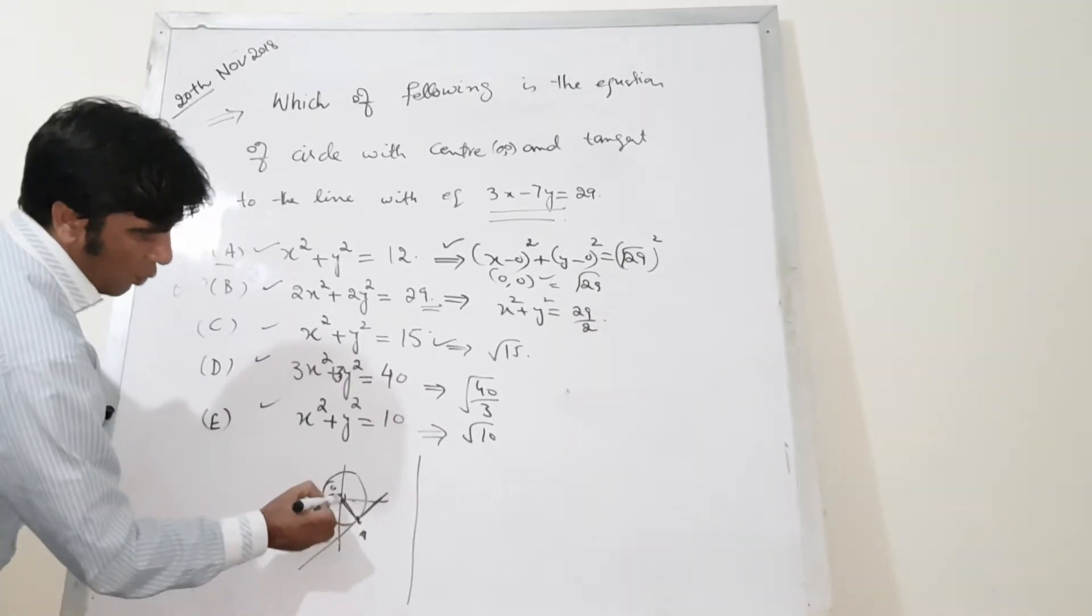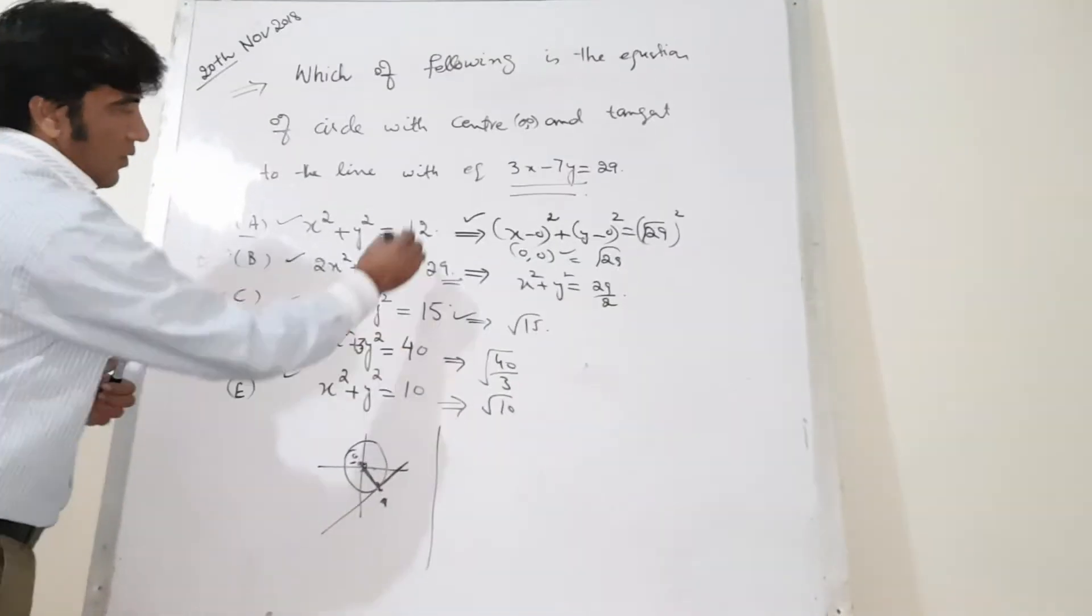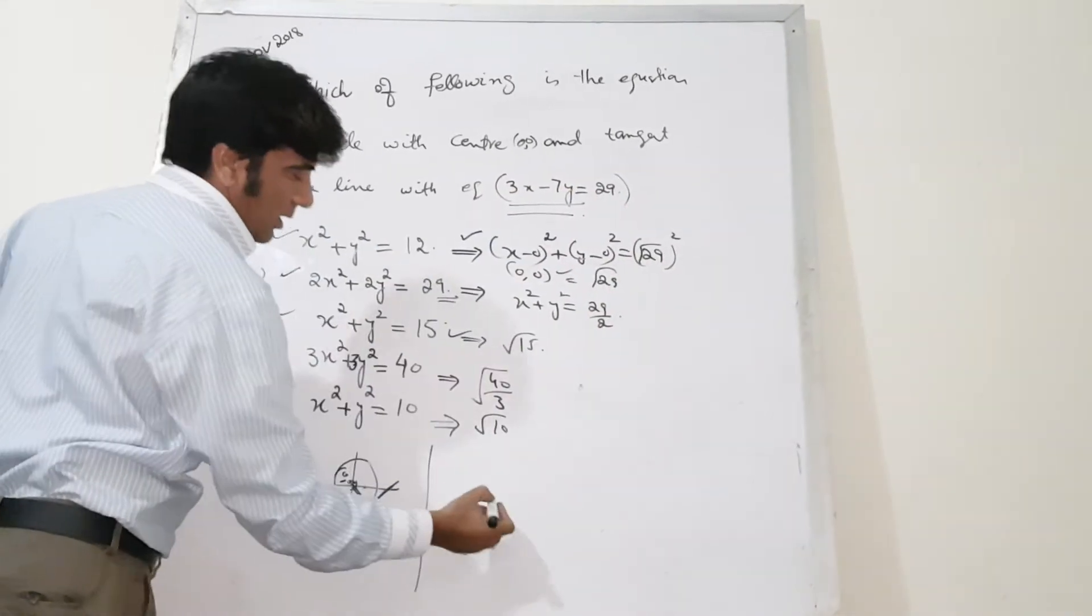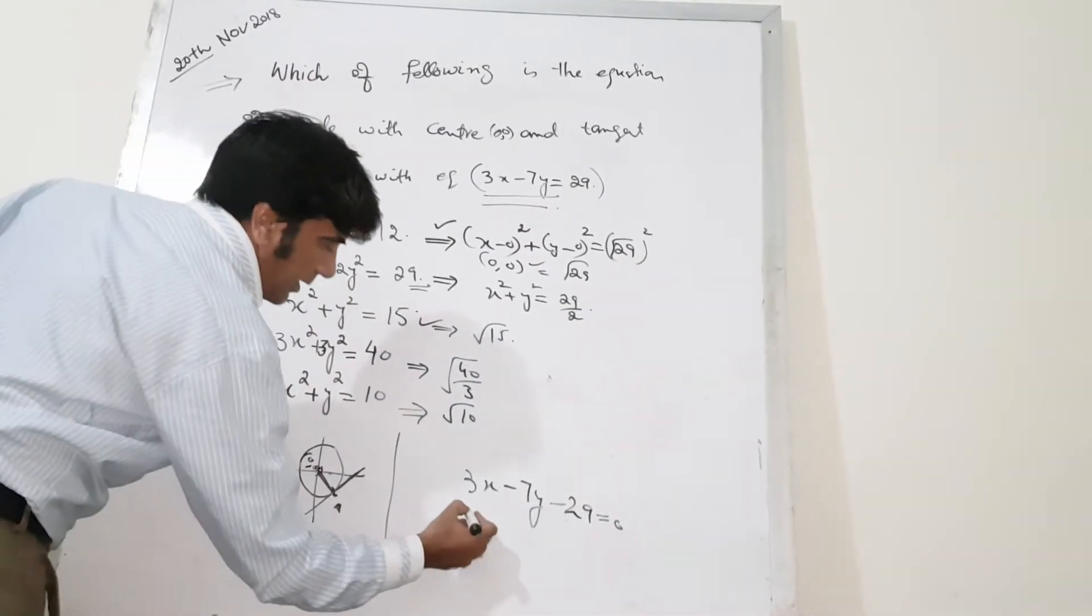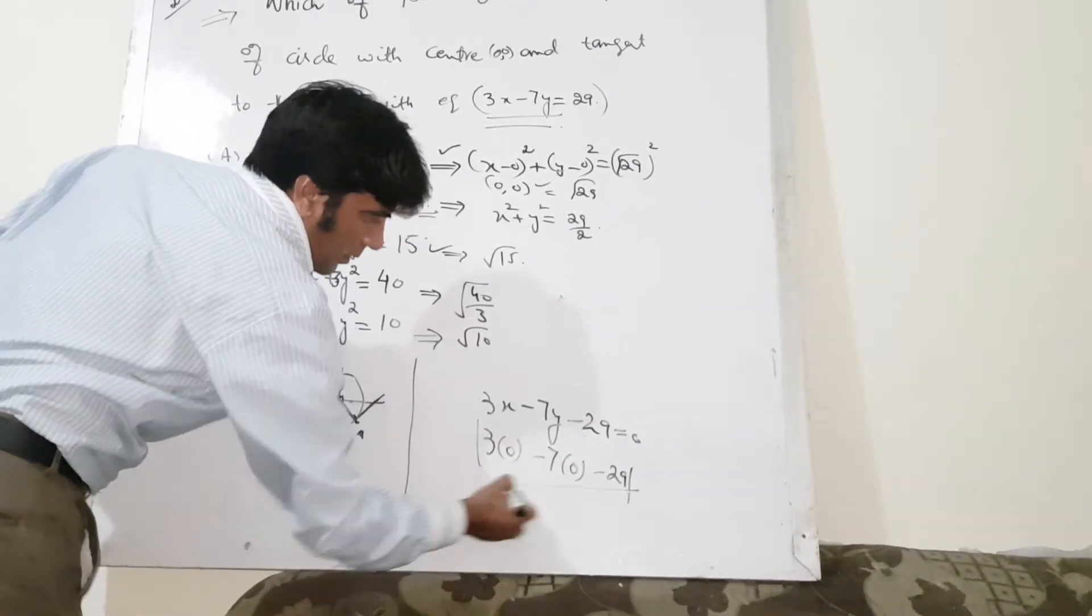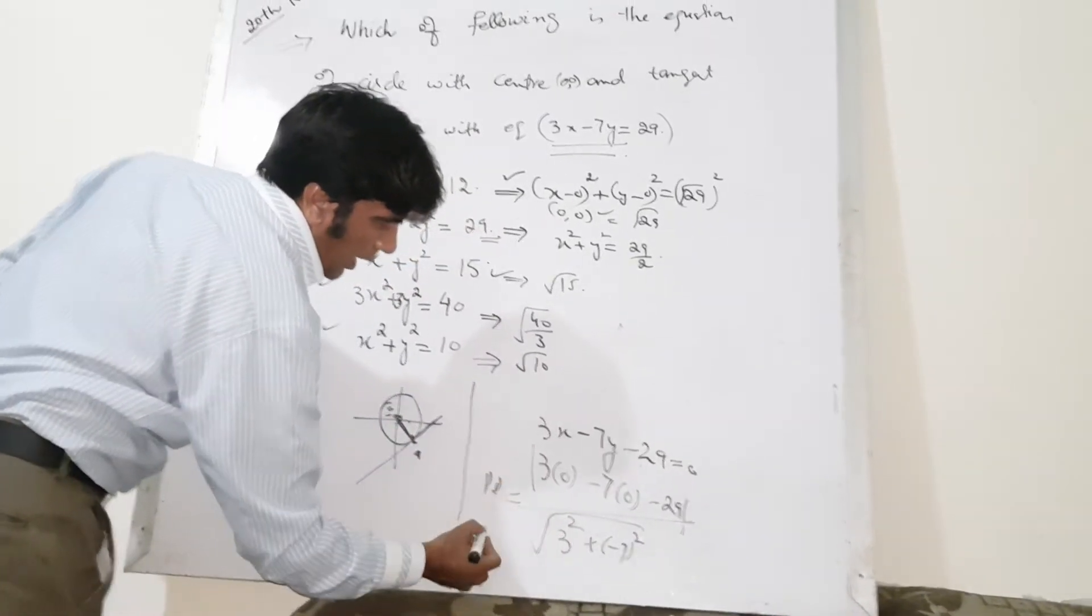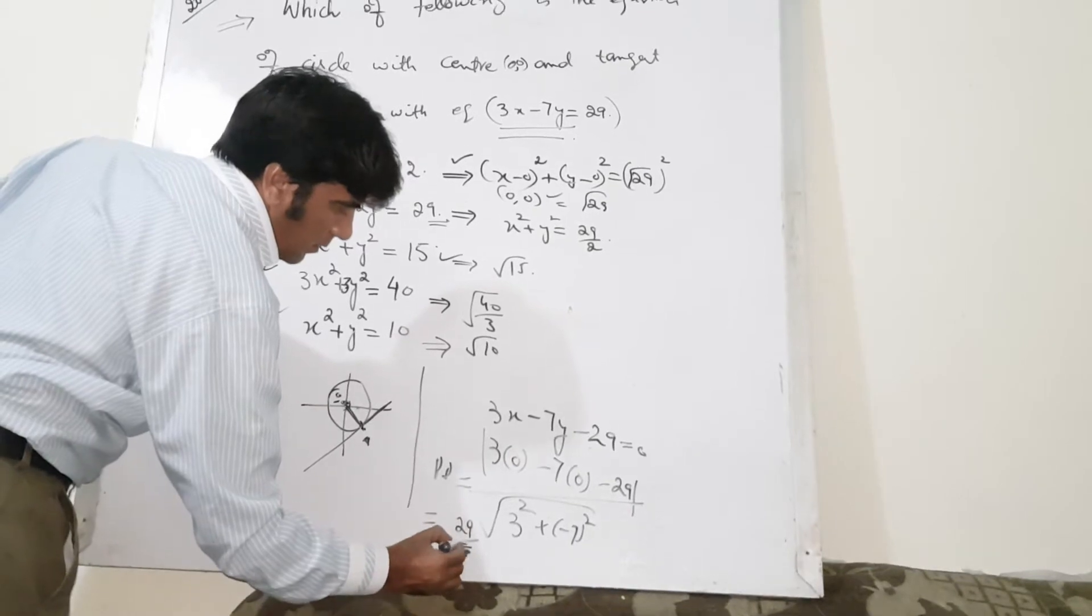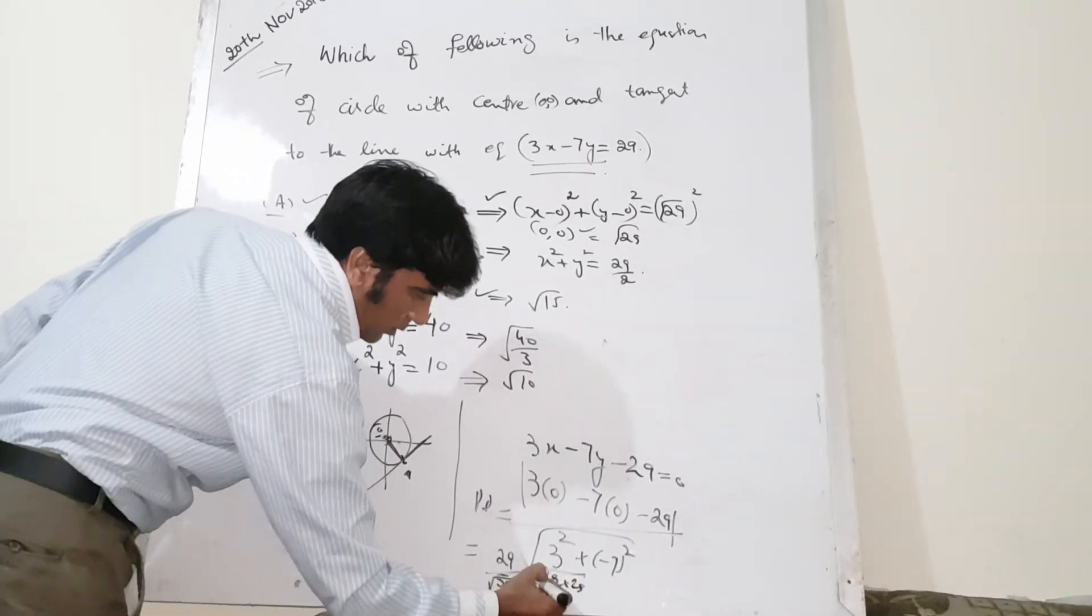So if you are able to calculate this distance which is equal to the radius, you can easily match this radius with all these radii. To calculate the distance of a point from the line, you already know 3x minus 7y equals 9 is the equation for a line, and its distance from the origin can be calculated by this formula. And this is 29 over 58, and further, now 29 could be written as 29 times 29 over 58.